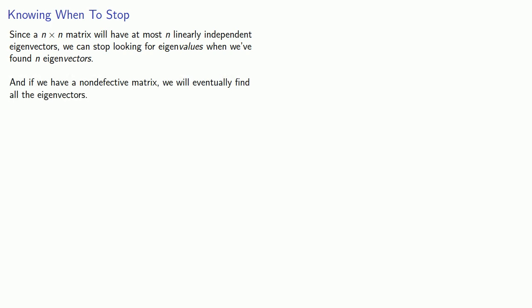And if we put this all together, this tells us when to stop. Since an n by n matrix will have at most n linearly independent eigenvectors, we can stop looking for eigenvalues when we've found n eigenvectors. And if we have a non-defective matrix, we will eventually find all of the eigenvectors. And so we're done with the problem. What's that? Question in the back? Oh, right. This is only for non-defective matrices. What if we have a defective matrix? How do we know when we've found all of the eigenvalues? We'll look at that next.